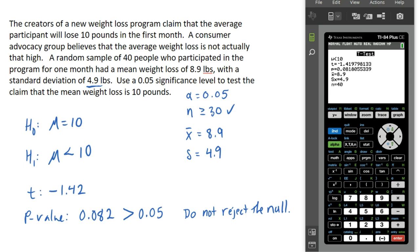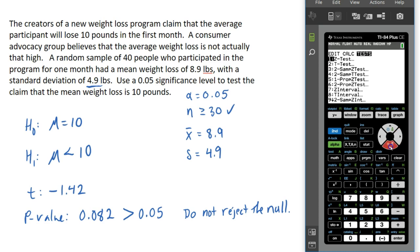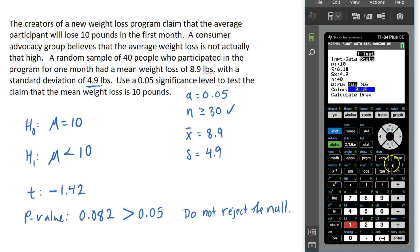Just to give you an idea: if we go back into the T-Test and change the sample mean to 8.1 pounds while leaving everything else the same, we get a p-value of 0.009, which is now less than our level of significance. So if that were the case, that would be significant enough to reject the claim that the average weight loss is 10 pounds.